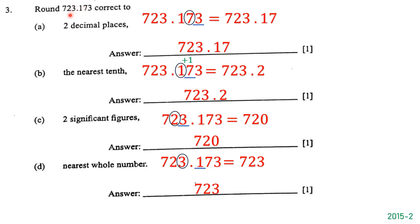The next question says: round 7723.173 correct to two decimal places. The first number behind the decimal point is 1 and the second is 7, so we circle 7 and underline 3 to its right. Since 3 is less than 5, we do not round up — we keep 7723.17 and drop the 3. The answer is 7723.17.